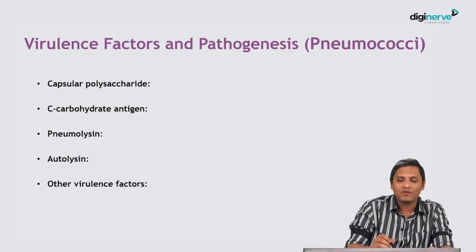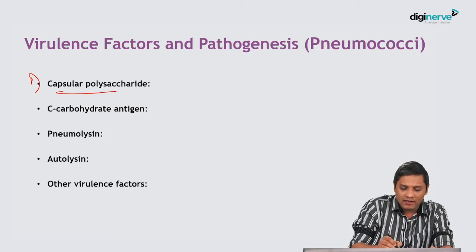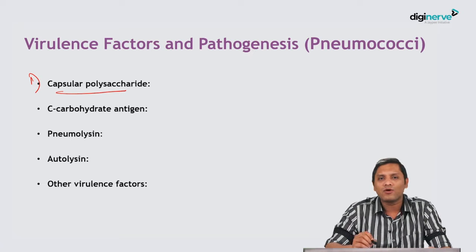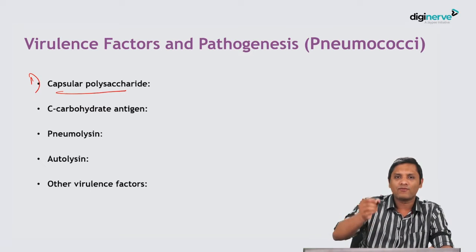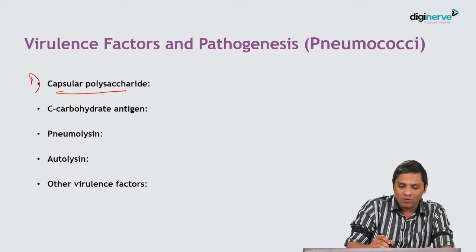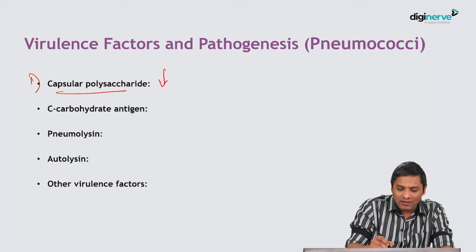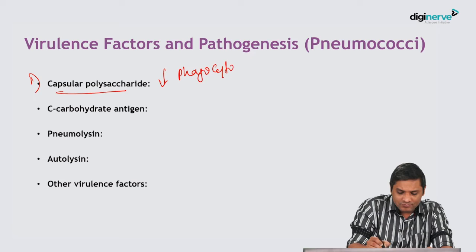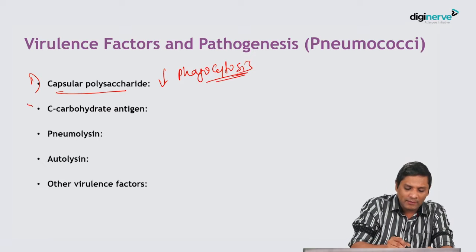The virulence factors which have contributed to pneumococcal pneumonia — the most important virulence factor is capsular polysaccharide. Pneumococcus is capsulated; it will have a capsule surrounding the cocci, and the capsule acts by inhibiting phagocytosis. The next virulence factor is the C carbohydrate antigen.